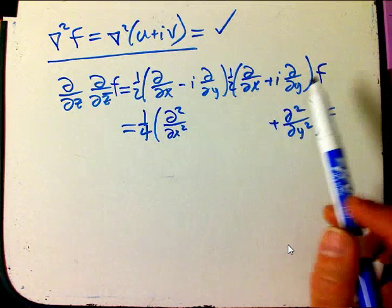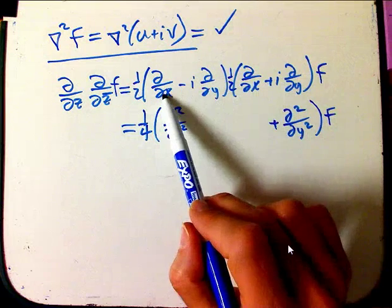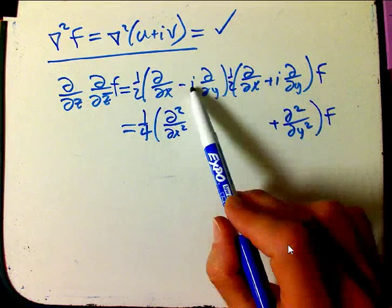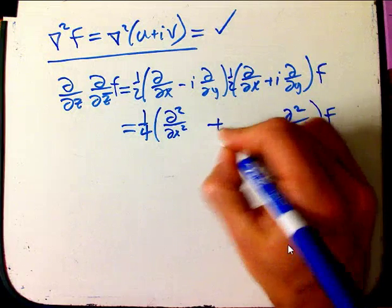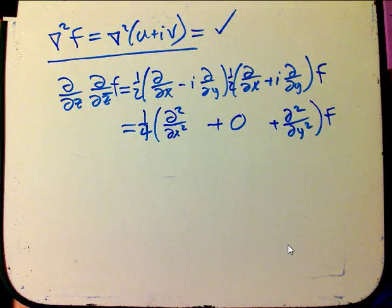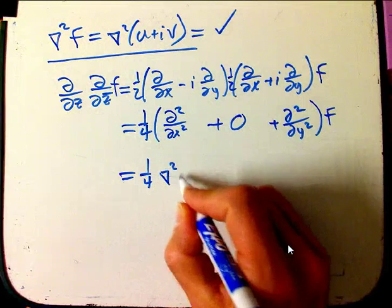And, then what happens? With the difference of squares, we expect everything else to cancel out. And, it does, by Clairot's theorem. d by dx of d by dy of f with an i, and then minus i, d by dy, d by dx of f. Those will die. So, those cancel out just as, very much the usual difference of squares kind of formula. That's just one fourth of the Laplacian of f.